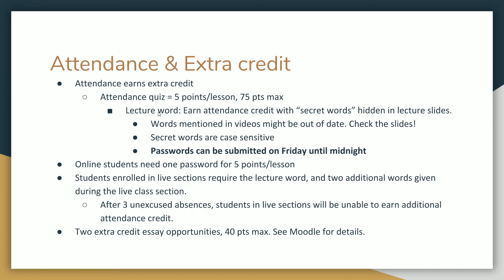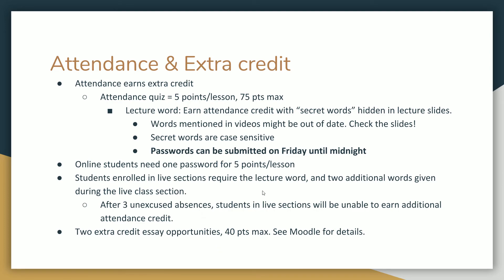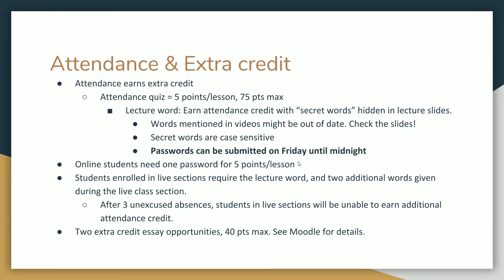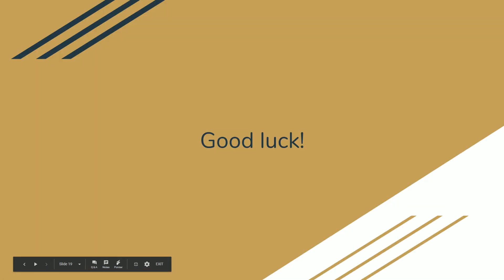In addition to attendance credit, there are two extra-credit essay opportunities — one due at the end of November and one at the end of the semester in December. Those extra-credit essays are each worth 20 points, for a maximum of 40 extra-credit points, basically making up for a missing quiz. Combined with the 75 possible attendance points, that's a lot of potential extra credit, which is part of why I feel comfortable grading assignments strictly and maintaining a strong late penalty.